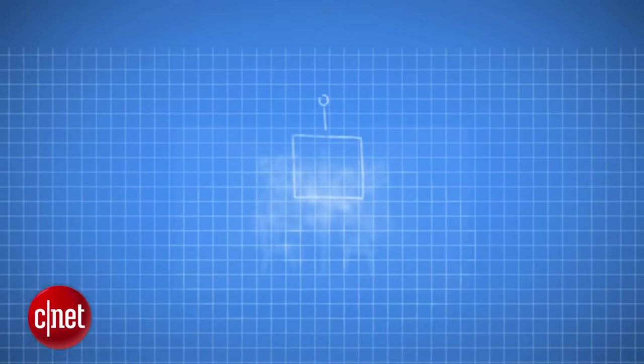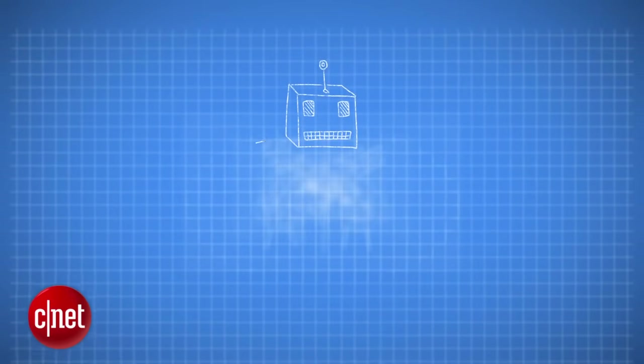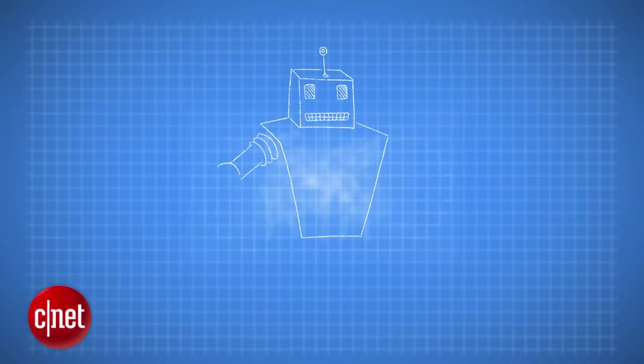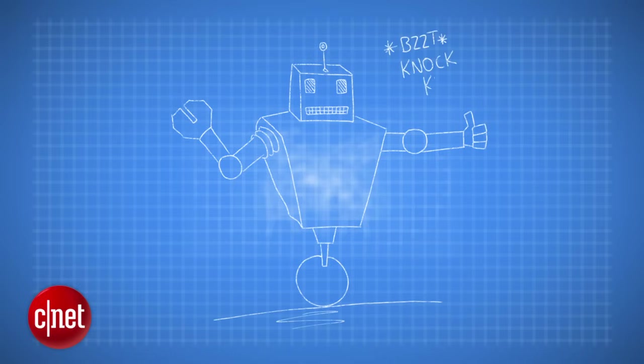So just because a computer looks like it's passed the Turing Test doesn't mean we have to bow down to our robot overlords just yet. But nevertheless, Turing's experiment gives us plenty to think about in terms of how we define intelligent behaviour and what we would want from an intelligent robot. And after all, who doesn't like thinking about robots?